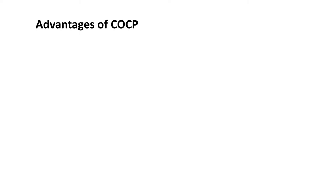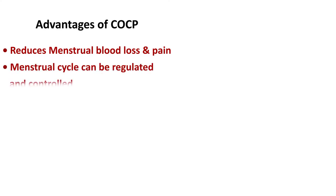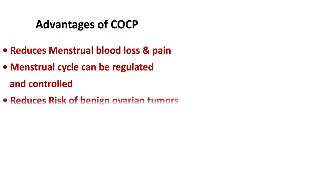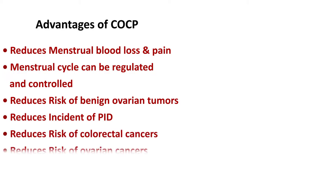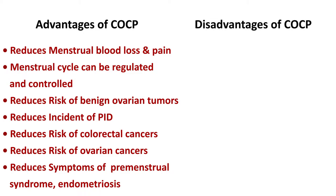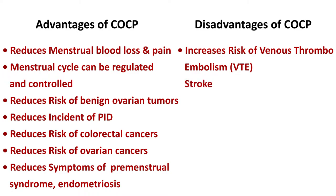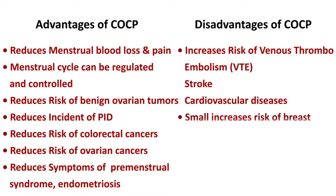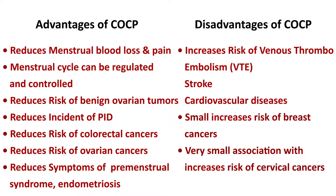Advantages of COCP include reduced menstrual blood loss and pain, regulated menstrual cycle, reduced risk of benign ovarian tumours, reduced incidence of pelvic inflammatory disease, reduced risk of colorectal and ovarian cancers, and reduced symptoms of premenstrual syndrome and endometriosis. Disadvantages include increased risk of venous thromboembolism, stroke, and cardiovascular diseases, a small increase in breast cancer risk, and a very small association with increased risk of cervical cancer.